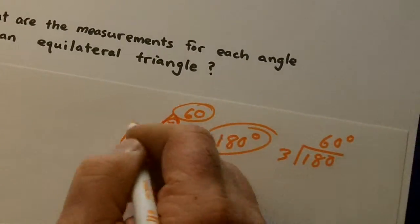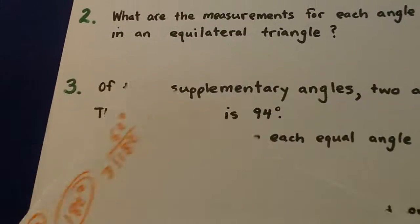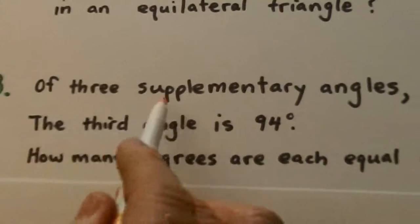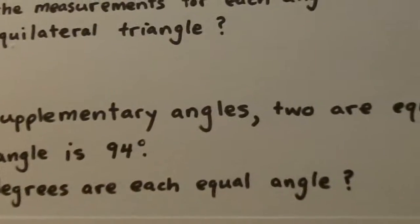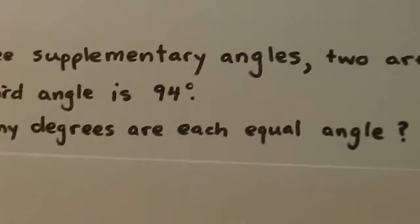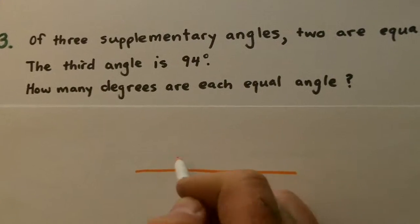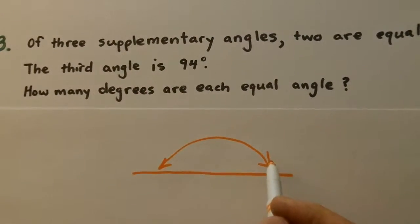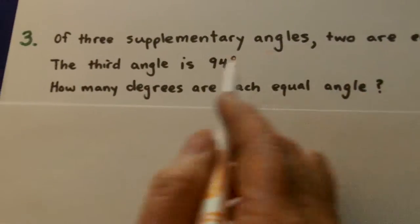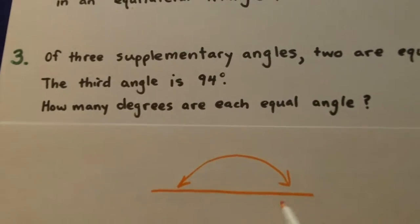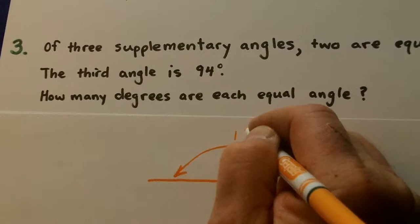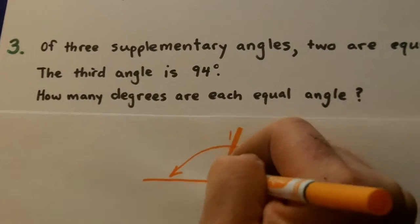Okay, let's go to three. Three supplementary angles. Now supplementary is 180 degrees, like this. We've got to know supplementary is 180. It says two are equal and the third angle is 94. So watch, 90 is about here, so 94 just a little bit here.